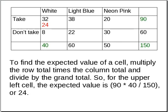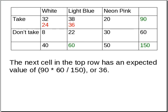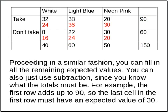To find the expected value of a cell, you multiply the row total — in this case 90 — times the column total — which is 40 — and divide by the grand total, in this case 150. So for the upper left cell, you get an expected value of 24. The next cell in the top row has an expected value of 90 times 60 divided by 150, which works out to 36. Proceeding in this fashion, you can fill in all the remaining expected values.